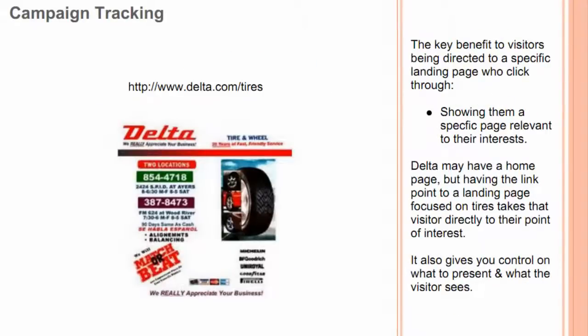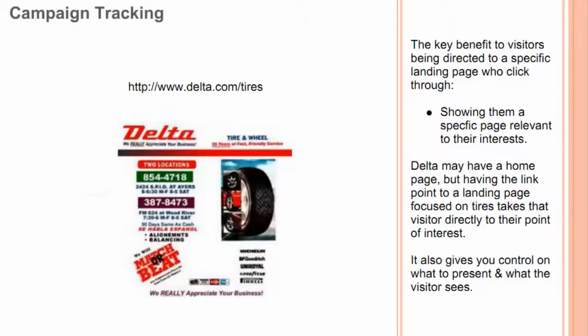The key benefit to visitors being directed to a specific landing page who click through is showing them a specific relevant page to their interest. A company may have a home page, but having a link point to a landing page focused on tires takes that visitor directly to their point of interest. It also gives you control on what to present and what the visitor sees.